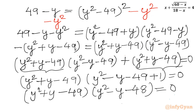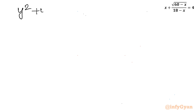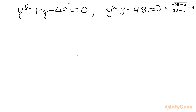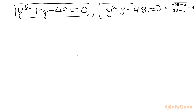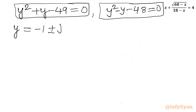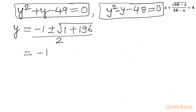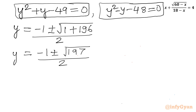From this we set each bracket equal to zero: first bracket gives y squared plus y minus 49 equals 0, and second bracket gives y squared minus y minus 48 equals 0. We now have two quadratic equations. Applying the quadratic formula to the first: y equals (minus 1 plus or minus square root of (1 plus 196)) over 2, giving y equals (minus 1 plus or minus square root 197) over 2.